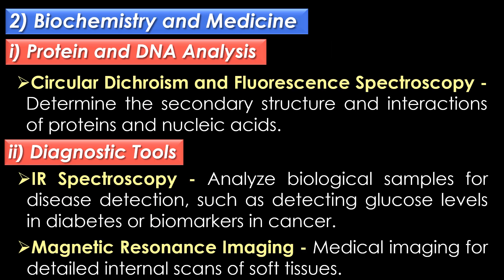In biochemistry and medicine, spectroscopy is used for protein and DNA analysis, diagnostic tools and pharmacology. In protein and DNA analysis, circular dichroism and fluorescence spectroscopy help to determine the secondary structure and interactions of proteins and nucleic acids.